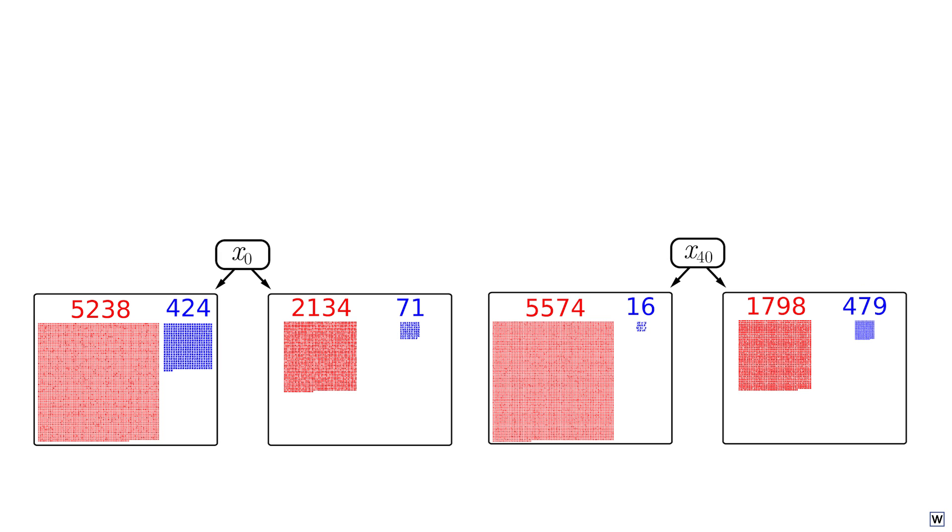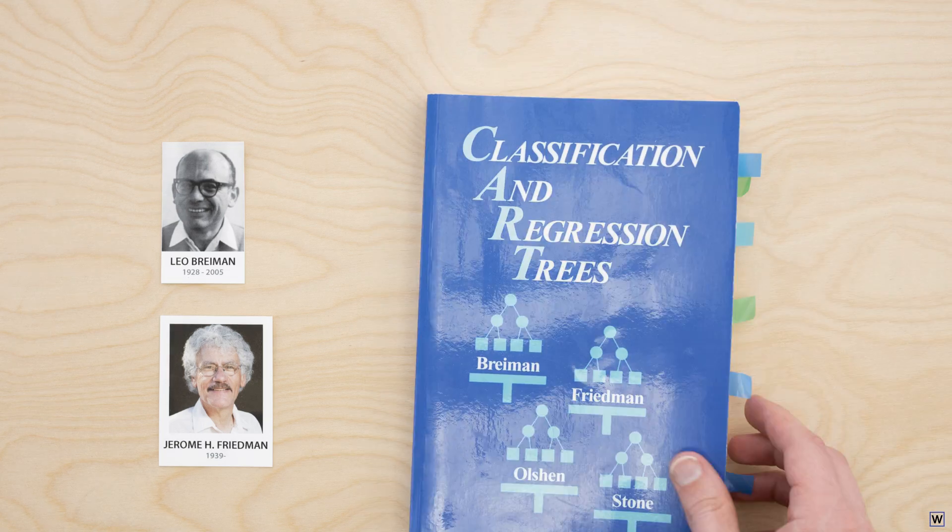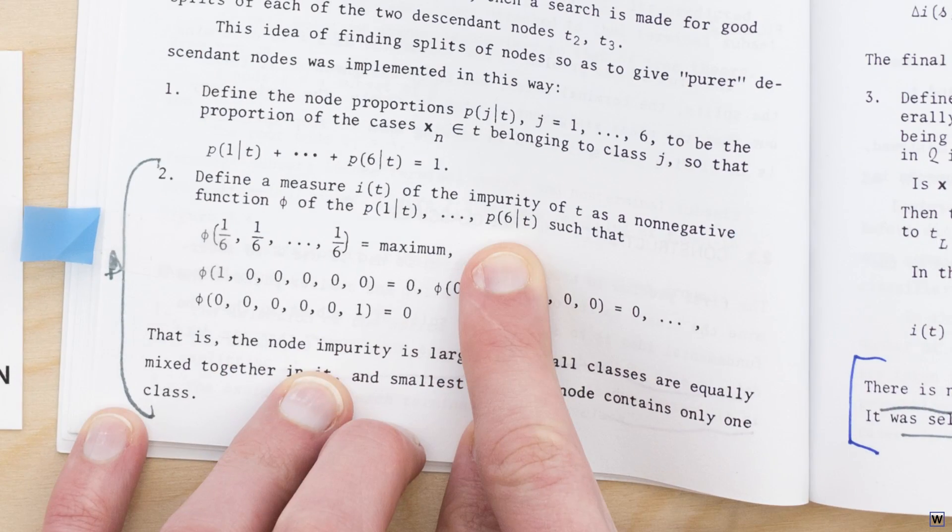What we need now is some mathematics to formalize our intuition. How should we measure how well our tree begins to divide our data? We would like to reward nodes that are like our left node on our x40 split, that are highly concentrated or pure with respect to a single class. Let's borrow another idea from our researcher friends, and create a measure of the impurity of each node.